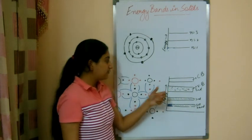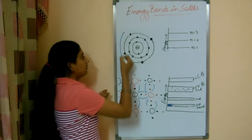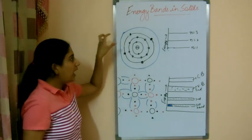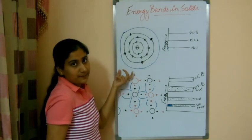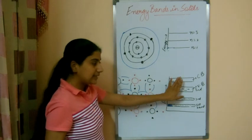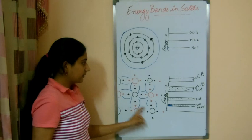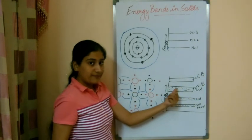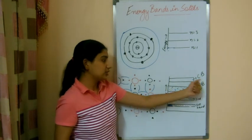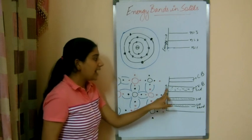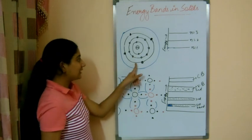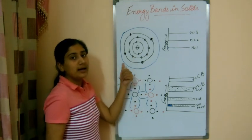Moving to the next orbit, all atoms will have this orbit empty. This orbit will also have some energy and will form a band. This empty band formed in the solid is the conduction band, and it is the very next band after the valence band. This is how the valence band and conduction band are formed, and why the valence band is completely filled even though each individual atom has an incomplete valence orbit.